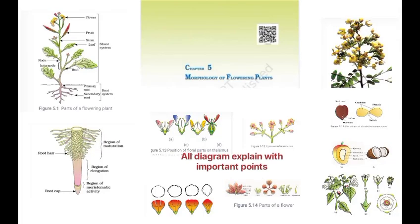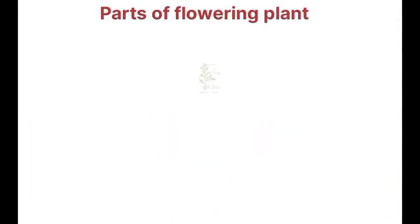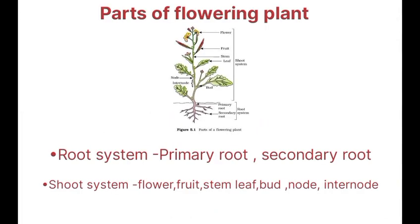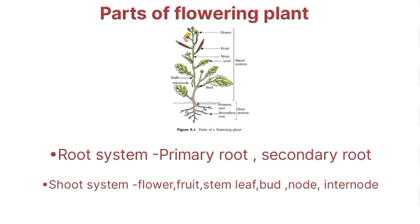Morphology of flowering plants — all diagrams explained with important points. Parts of flowering plants: root system and shoot system.